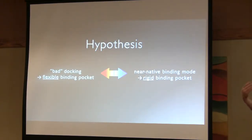So we came up with a hypothesis. What we think, and there's evidence in experimental studies, is the more flexible a binding pocket is, the worse the docking pose. Or if we have a bad docking pose, we have a flexible binding pocket. And vice versa, we hypothesize that a near-native binding mode corresponds to a rigid structure. One thing you may think about why is that is the coupling between interactions.